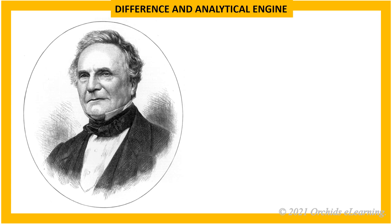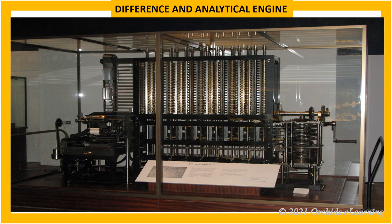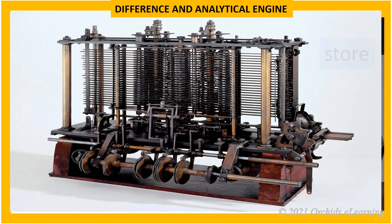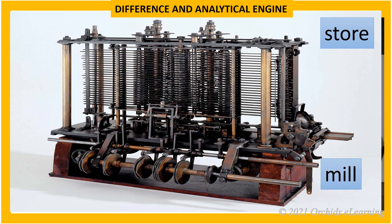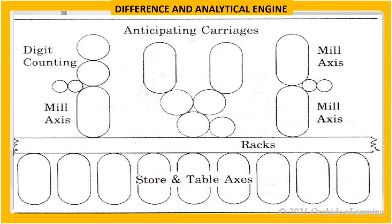Difference and Analytical Engines: In 1822, Charles Babbage designed the Difference Engine. This machine was to be used in calculating and printing simple mathematical tables, but he could not complete it. Later, in 1834, he invented the Analytical Engine. The main parts of this machine were called the Store and Mill. Data was stored with the help of punched cards, and the Mill processed the data to give a result. The Store of the Analytical Engine is similar to the presently used memory.